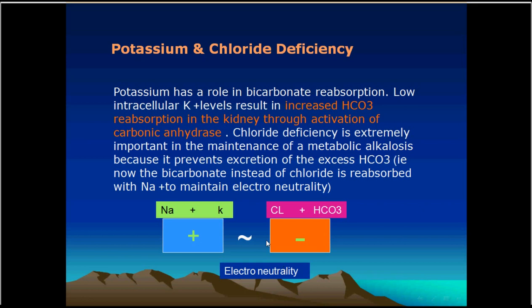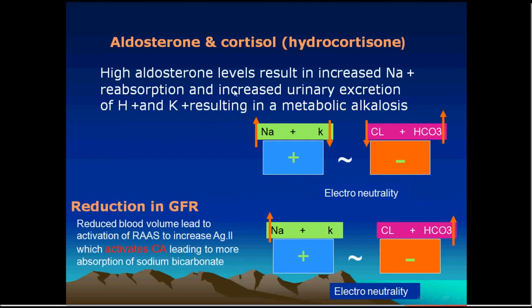The same applies to kidney losses. Loss of bicarbonate from the kidney will be associated with an increase in chloride, and the two together will be 130. This is one important point to keep in mind while explaining and discussing the ABG.